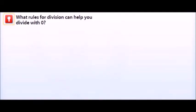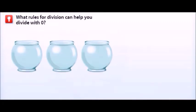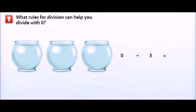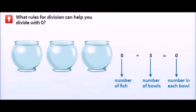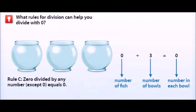What rules for division can help you divide with 0? Let's say you have 0 fish and 3 fish bowls. If there are no fish, there will be 0 fish in the bowls. The dividend is 0 fish, the divisor is 3 bowls, and the quotient is 0 fish in each bowl. So 0 divided by 3 is 0. This is another division rule: 0 divided by any number except 0 equals 0.